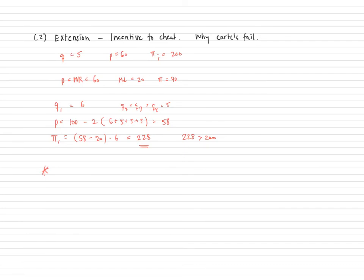All right. Here's another thing. Suppose all firms recognize that they can make more money if they cheat by producing one more unit of the good. Well, if that's the case, then they all produce six units.